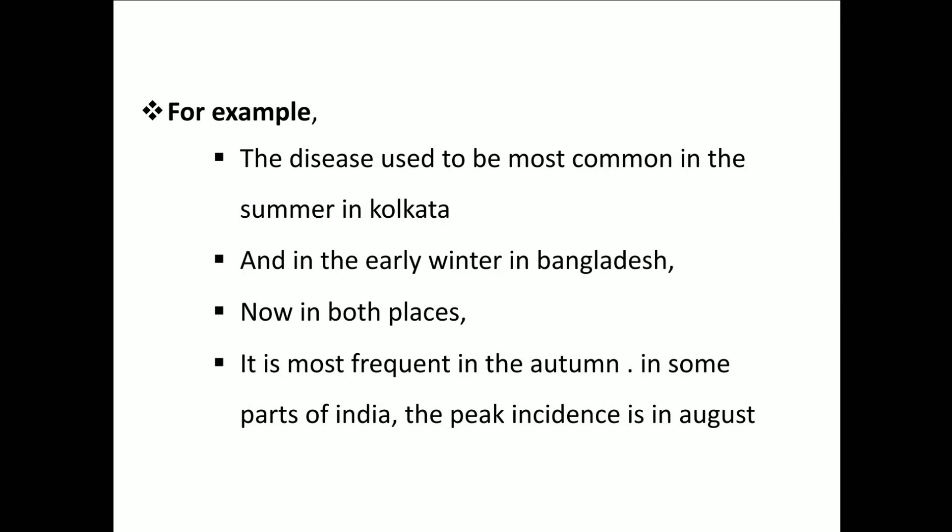The seasonal variants are very different from country to country and even between regions. The disease used to be most common in summer in Calcutta, while in Bangladesh it is seen in early winter. Now in both places it is most frequent in autumn. In some parts of India, the peak incidence is in August. So it is varying from region to region.